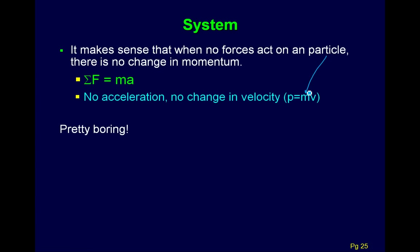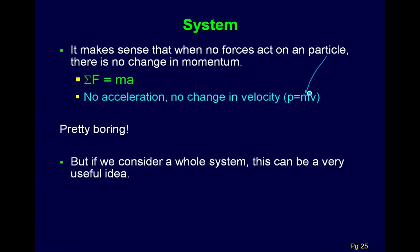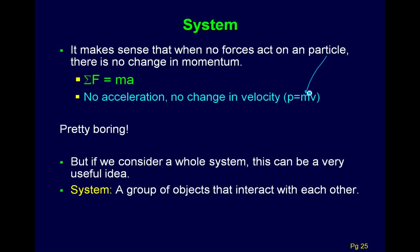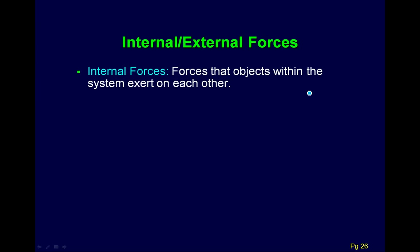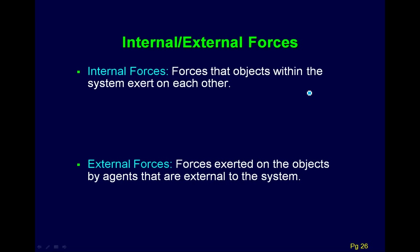However, if we consider a whole system, this turns into a very useful idea. A system is just a group of objects that interact with each other. When talking about a system, we can break our forces into two kinds: internal forces — forces that objects within the system exert on each other — and external forces, forces exerted on objects by something external to the system.